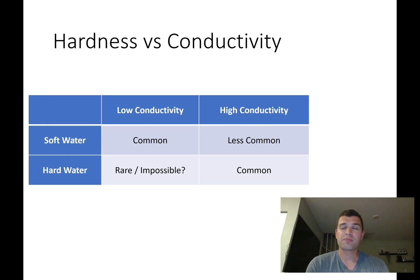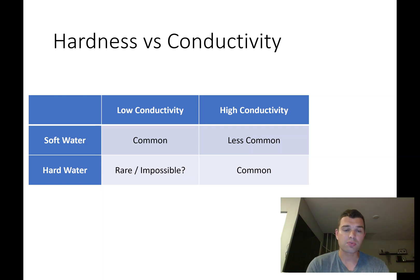What's less common would be high conductivity soft water. One example of that would be sugar water. Sugar water would have high conductivity — a very good ability to pass an electrical current — however sugar would not contribute to the calcium or magnesium count, which is how you determine if water is soft or hard. So you could have sugar water that's low in calcium and magnesium, which would be high conductivity soft water.